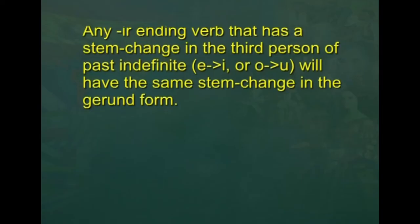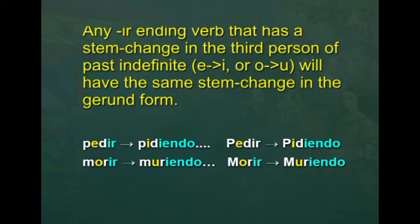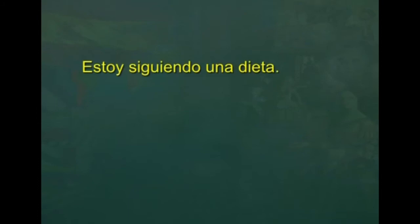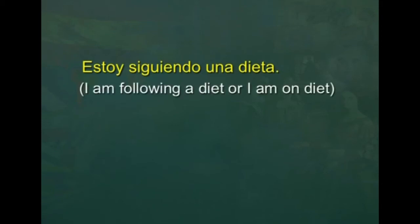There are also some verbs which need a stem change before adding the gerund ending. Any -IR ending verb that has a stem change in the third person of past indefinite — E becomes I or O becomes U — will have the stem change in the gerund form. Like pedir becomes pidiendo and morir becomes muriendo. Por ejemplo: estoy siguiendo una dieta — I am following a diet.